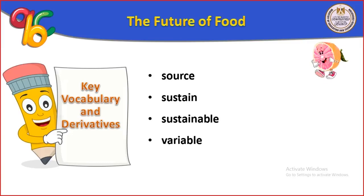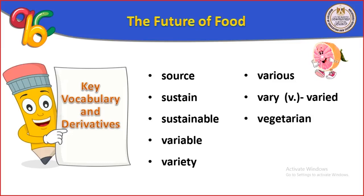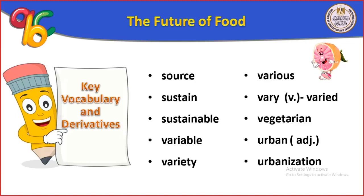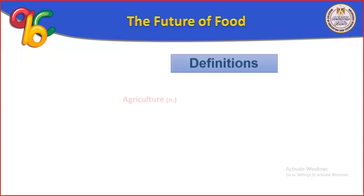Sustain means يستمر (to continue). Variable means متغير (variable). Variety means تغيرات أو اختلاف (variety). Various means مختلف (various). Vary is a verb, and its past tense is varied. Vegetarian is a person who eats only vegetables. Urban means civil, متحضر (civilized), and urbanization means التحضر (urbanization).